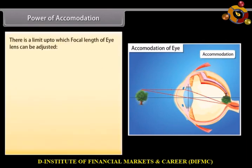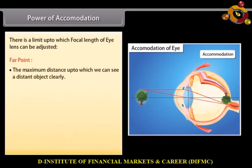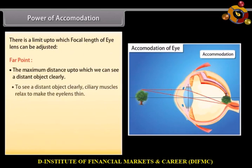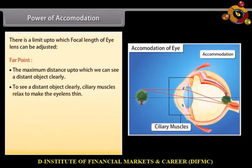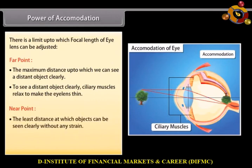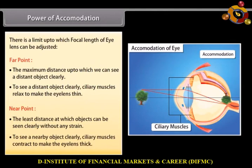There is a limit up to which the focal length of the eye lens can be adjusted. Far point — the maximum distance up to which we can see a distant object clearly. To see a distant object clearly, ciliary muscles relax to make the eye lens thin. Near point — the least distance at which objects can be seen clearly without any strain. To see a nearby object clearly, ciliary muscles contract to make the eye lens thick.